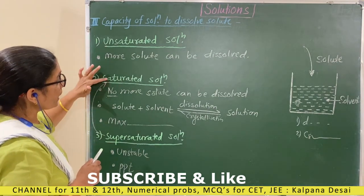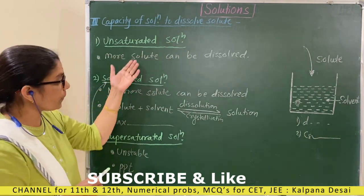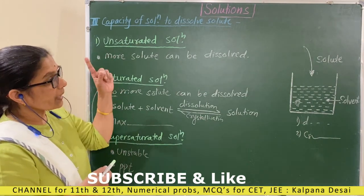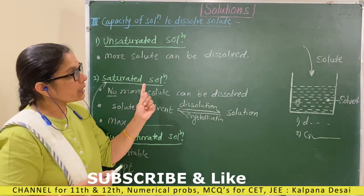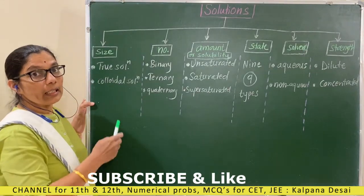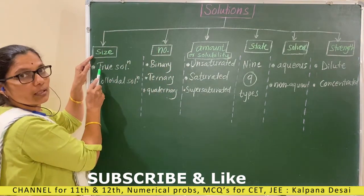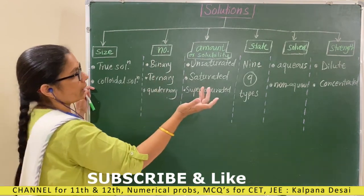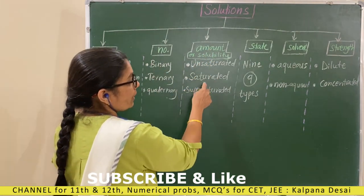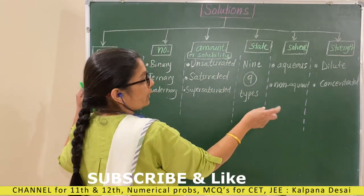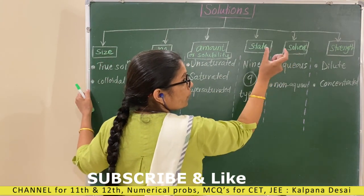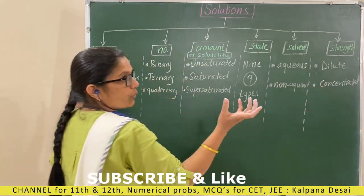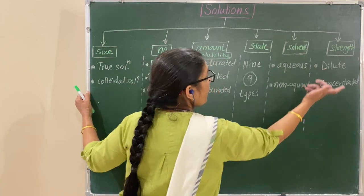So there are three types of solution depending on the amount of solute. Now, a summary of the different ways to classify solutions: depending on size — true solution, colloidal solution; depending on number of components — two component binary, three component ternary, four component quaternary; depending on state of solute and solvent — nine types; depending on solvent — if solvent is water, aqueous solution; if solvent is other than water, non-aqueous solution; depending on strength — if strength is high, concentrated; if strength is low, dilute solution.